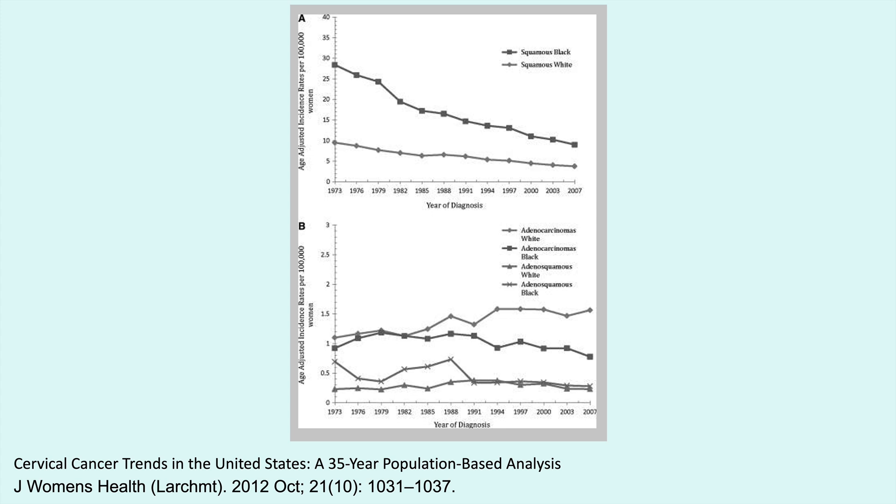The relative incidence of adenocarcinoma has increased in the United States due to relative decreases in squamous cell carcinoma from successful screening with cervical cytology. The squamous line is decreasing across time, however the adenocarcinoma rates do not seem to be doing the same thing. This chart also highlights the disproportionate incidence rates of cervical cancer and death in Black, Hispanic, and Native populations.